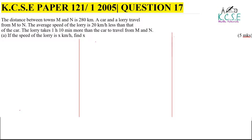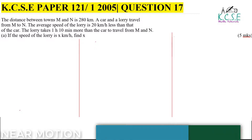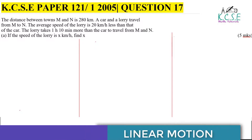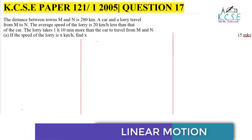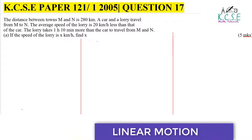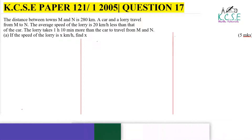The distance between towns M and N is 280 kilometers. A car and a lorry travel from M to N. The average speed of the lorry is 20 kilometers per hour less than that of the car. The lorry takes 1 hour 10 minutes more than the car to travel from M to N.